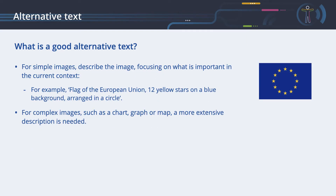For simple images, describe the image, focusing on what is important in the current context. For example: flag of the European Union, twelve yellow stars on a blue background, arranged in a circle.